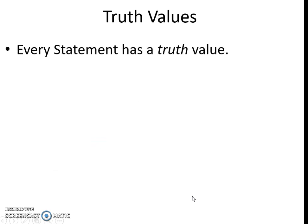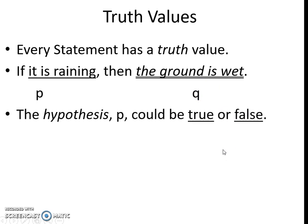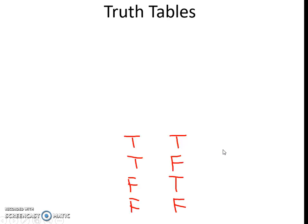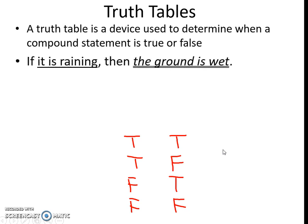Truth values — every statement has a truth value. For example, if it is raining, then the ground is wet. 'It is raining' is P; 'the ground is wet' is Q. So this is your hypothesis — if it is raining, you make a prediction — and the conclusion is the ground is wet. The hypothesis P could be true or false, and the conclusion Q could be true or false.